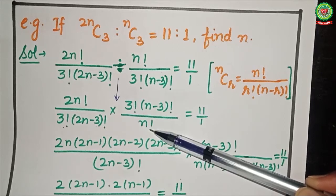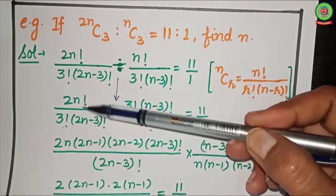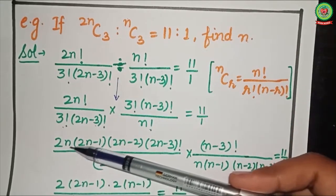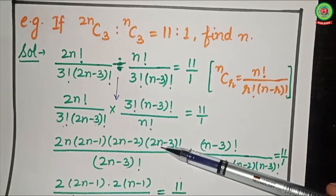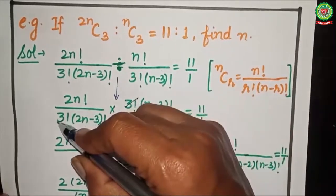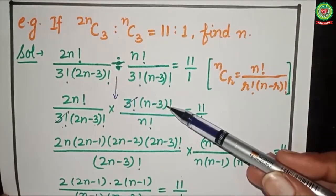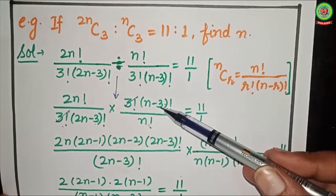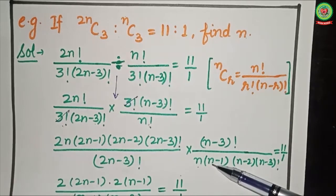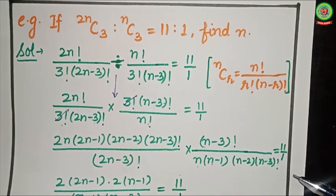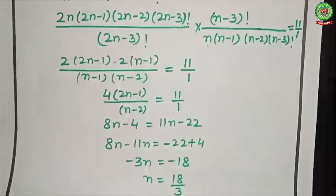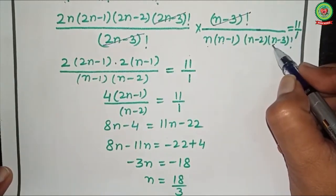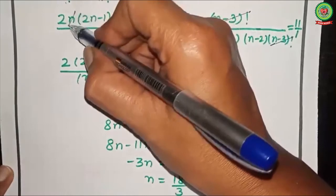Simplifying the factorial expressions: expand 2n! down to (2n−3)! as 2n × (2n−1) × (2n−2) × (2n−3)!. The (2n−3)! cancels. Similarly expand n! down to (n−3)! as n × (n−1) × (n−2) × (n−3)!, and the (n−3)! cancels. The 3! terms cancel, and n cancels with n.